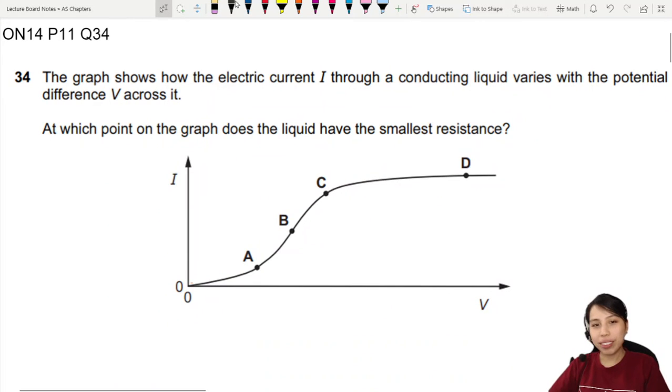The graph shows how electric current through a conducting liquid varies with potential difference across it. So this is our I-V curve. And they ask us at which point on the graph does the liquid have the smallest resistance? Smallest resistance.